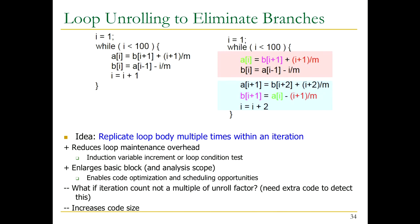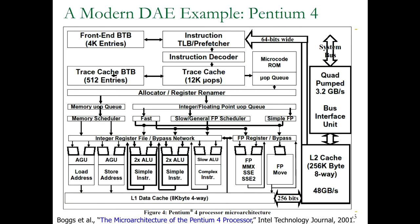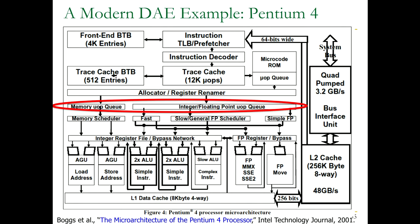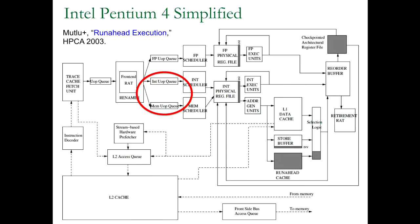Decoupled access and execute, in a very limited form, is employed in Pentium 4. Pentium 4 steers instructions based on their types into different queues: long queues for memory microoperations, and queues for integer and floating-point microoperations. These go decoupled from each other. Even though they have out-of-order execution, this adds another level of decoupling. Sometimes memory operations get backed up, but now you can fetch integer operations, and vice versa.